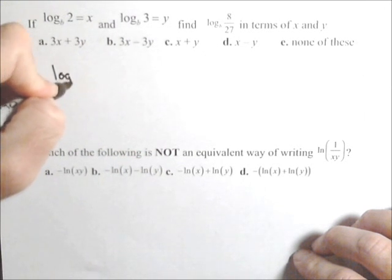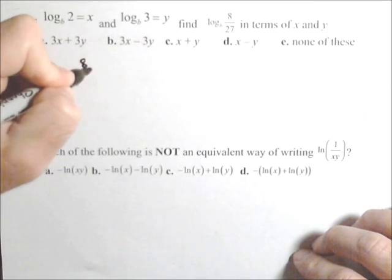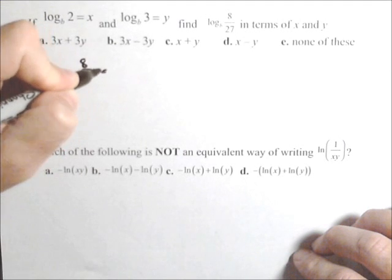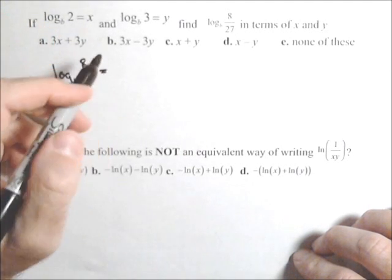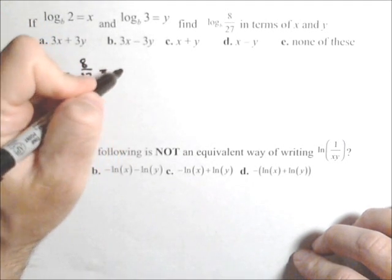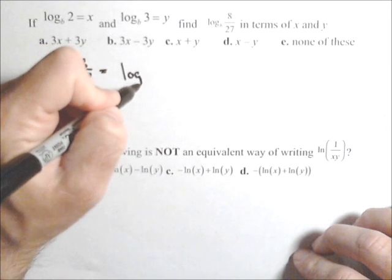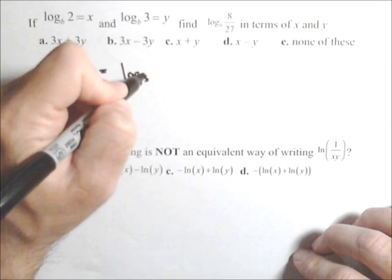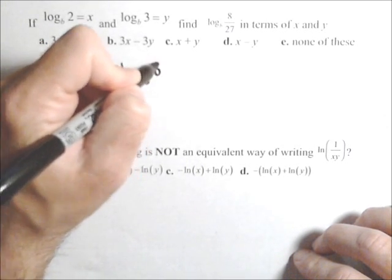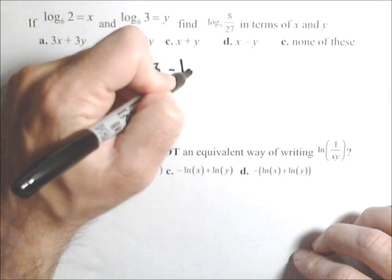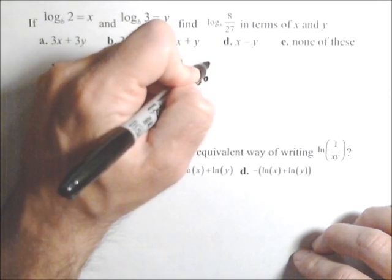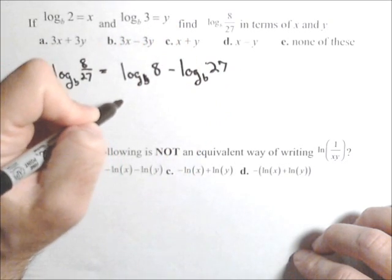So we start off with log base b of eight over 27. Now, because of the division, I can write this as two separate logs with subtraction. So log base b of eight minus log base b of 27. So that's one property we're gonna apply.